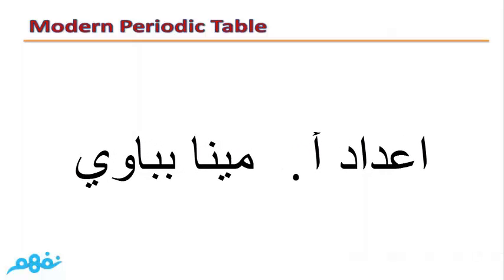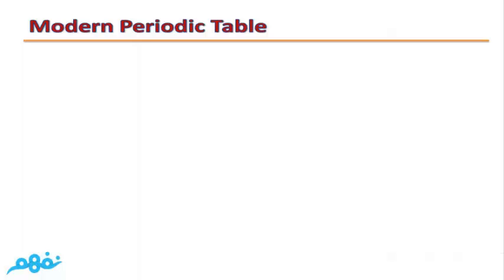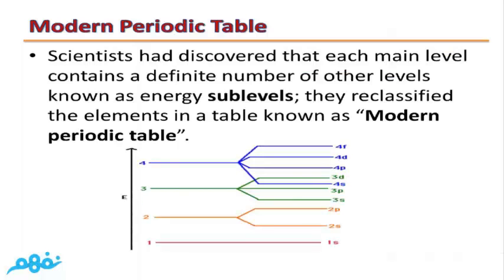Now let's talk about the final attempt for classification of elements, which is the modern periodic table. Scientists had discovered that each main energy level — from the seven energy levels which start with K and end with Q — contains a specific number of other levels known as energy sub-levels. The total number of energy sub-levels is four: s, p, d, and f.